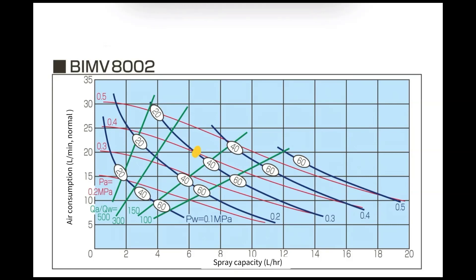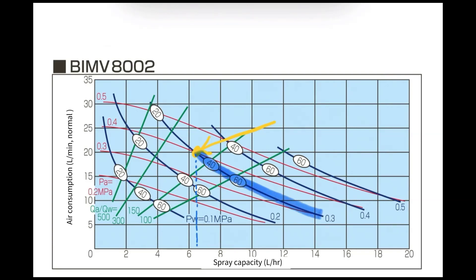Now let's try reading specific figures. At this point, for the spray flow rate, look at the water amount on the horizontal axis — it is 6.3 liters per hour. The liquid pressure at this point is at the end of the blue line, so it's 0.3 megapascals. For the air consumption, look at the vertical axis — it is 20 normal liters per minute, and the air pressure at that point is 0.4 megapascals.